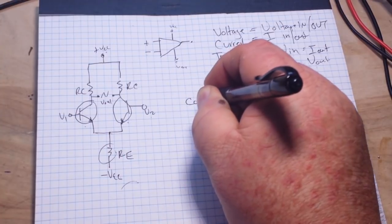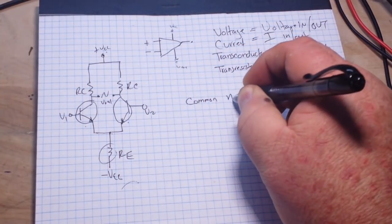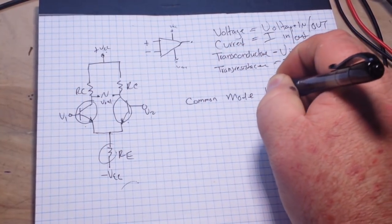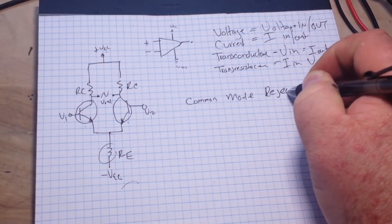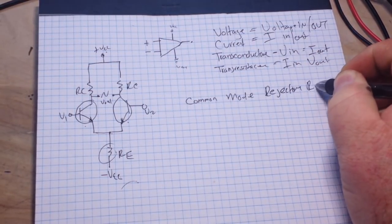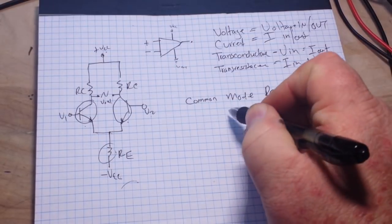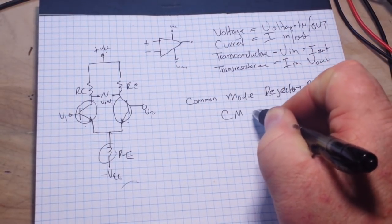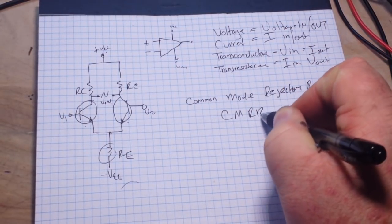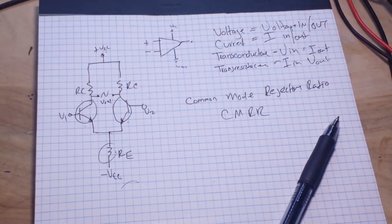But this is not a perfect world, it never is. So in that case, what we end up with is what's called common mode rejection ratio, and you'll find that expressed in data sheets as CMRR.